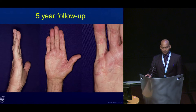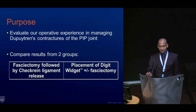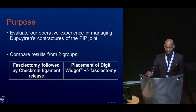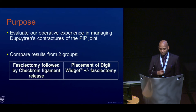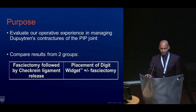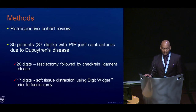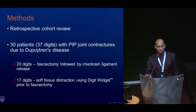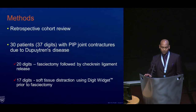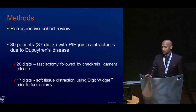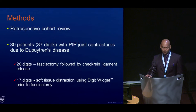At five years, this is the patient's follow-up. To summarize the study purpose, we compared those two groups in a retrospective review. We had 30 patients — 37 digits total. Twenty digits had fasciectomy followed by check rein ligament release, and the remainder had the digit widget placed prior to fasciectomy.